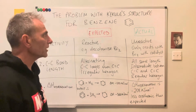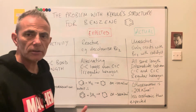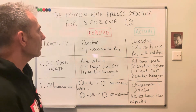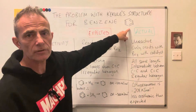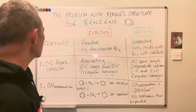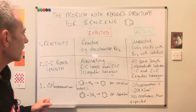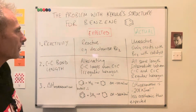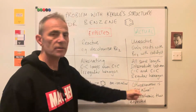I just thought I'd make a quick video to help with a very common question in organic chemistry about the problems associated with Kekulé's structure for benzene. We're going to look at the three key pieces of evidence that were expected from Kekulé's structure and what was actually observed.